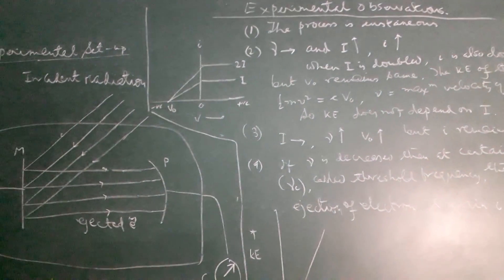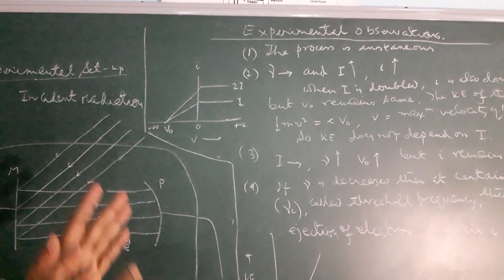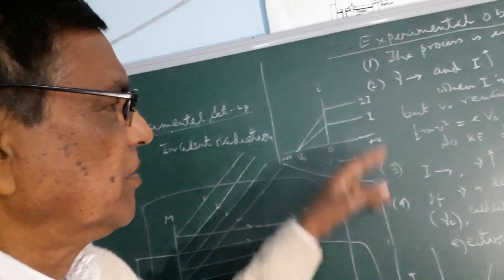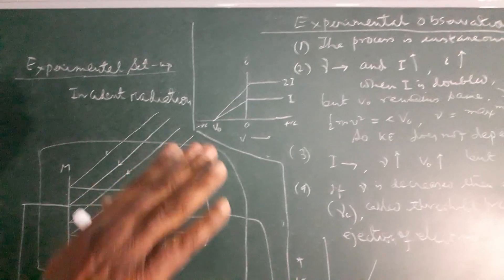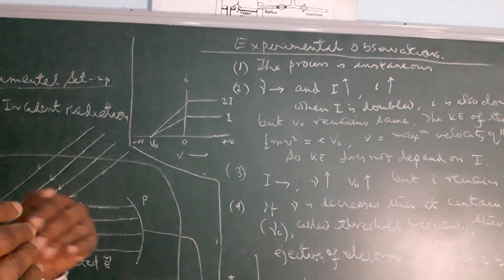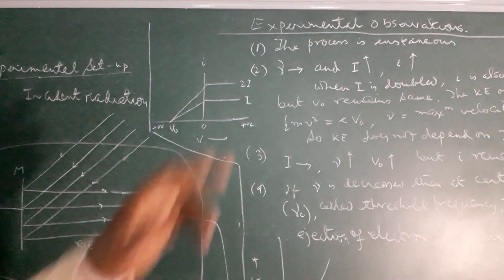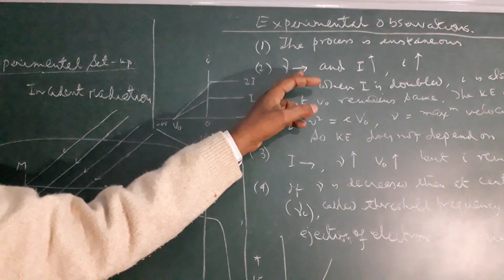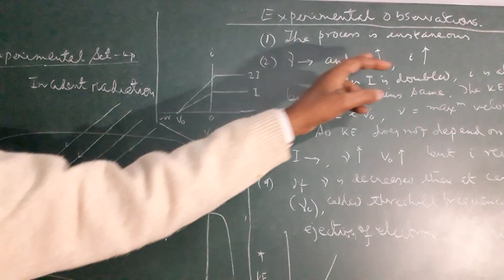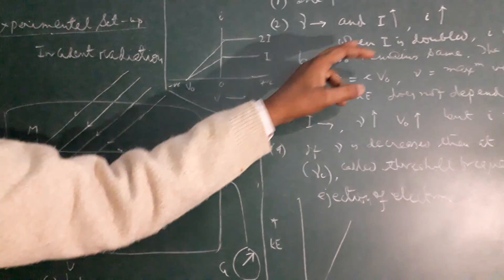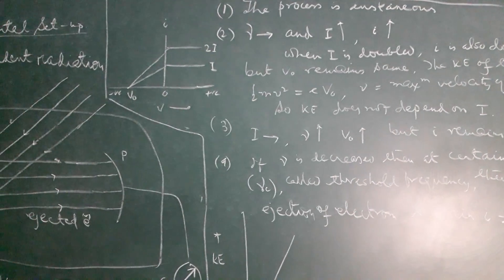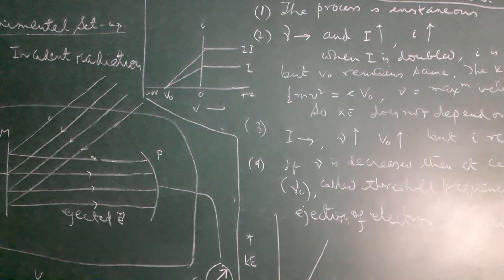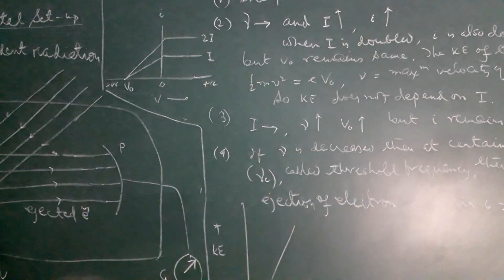The experimental observations, as done by scientist Hertz, are categorized into four parts. One: the process is instantaneous — whenever radiation falls and electrons are ejected, there is no time lag. Two: whenever the frequency is kept constant but intensity is increased, the photocurrent strength also increases. If intensity is doubled, photocurrent is also doubled. But V0, the measure of kinetic energy, remains fixed — there is no change in kinetic energy.